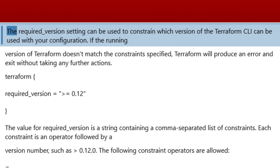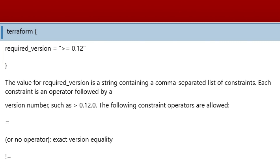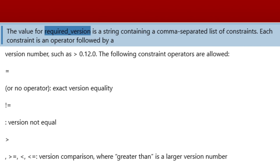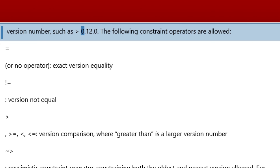Versioning: The `required_version` setting can be used to constrain which version of the Terraform CLI can be used with your configuration. If the running version of Terraform doesn't match the constraints specified, Terraform will produce an error and exit without taking any further actions. The value for `required_version` is a string containing a comma-separated list of constraints, where each constraint is an operator followed by a version number, such as `0.12.0`.